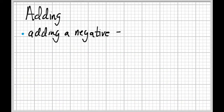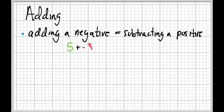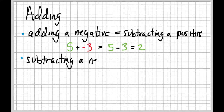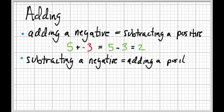Moving on — let's talk about adding. When we add a negative, that's the same as subtracting a positive. For example, five plus negative three is the same as five minus three, which is two. And subtracting a negative is the same as adding a positive. So five minus negative three is the same as five plus three, which is eight.